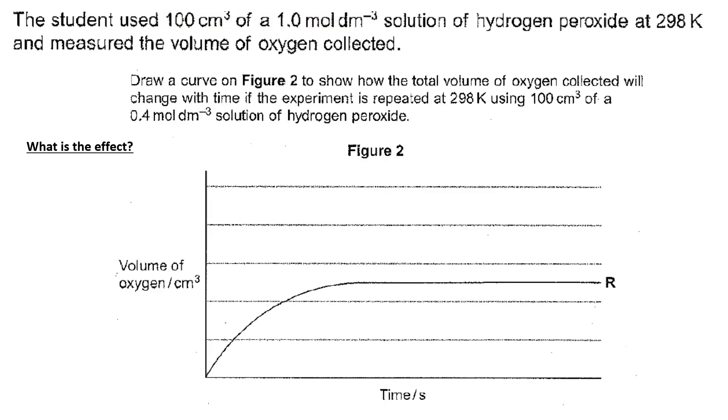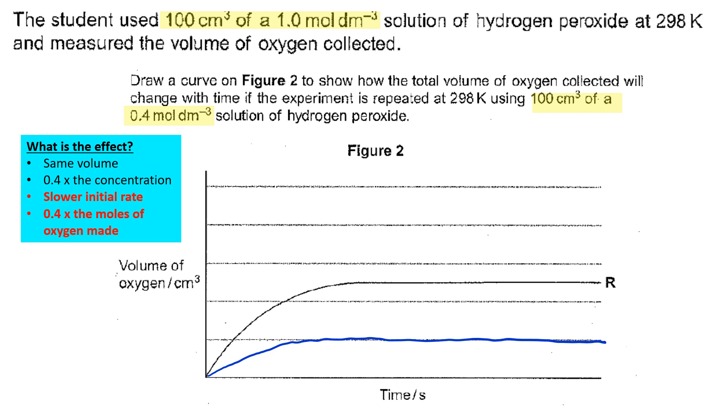Now the next thing to look at is a curve on figure two to show how the total volume of oxygen collected will change with time if the experiment is repeated at 298K using 100 cm³ of 0.4 mol dm⁻³ solution of hydrogen peroxide. So what's happening here is the same volume, 0.4 times the concentration, which will give you a slower initial rate and 0.4 times the moles of oxygen made.